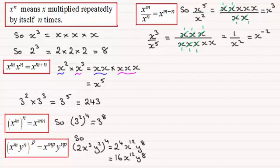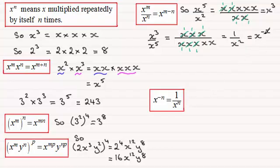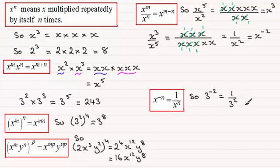The negative power rule states: x to the power minus n is 1 divided by x to the power n. For instance, 3 to the power minus 2 means 1 divided by 3 squared, and 3 squared is 9, so it's going to be 1 ninth.